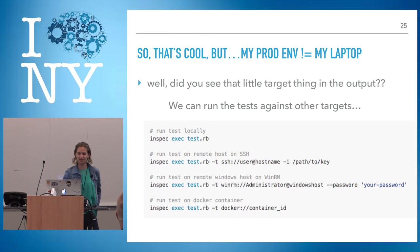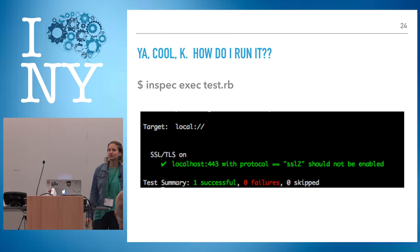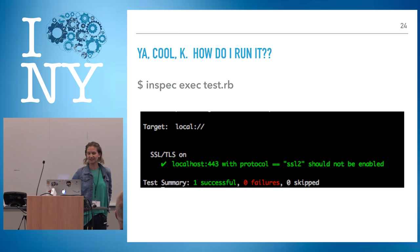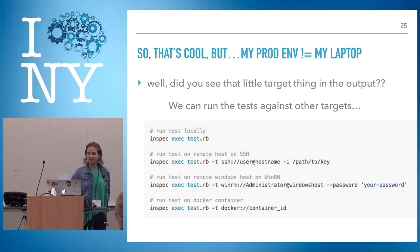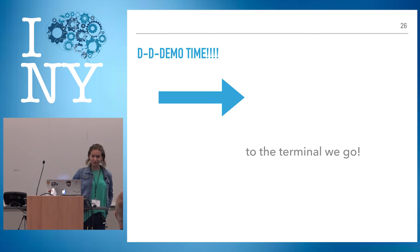If you notice in the last slide there was a little card there that says 'target local'. That target local tells you where you're running your tests. So if you run it against other places, you'll see that the little target changes. You can run it against whatever you want — I'm going to show you a little bit about that.